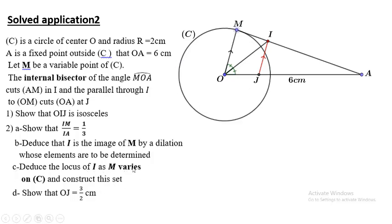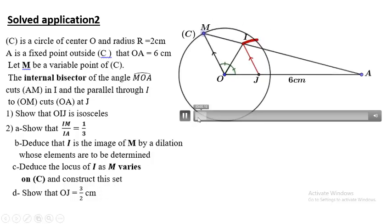Part C: Deduce the locus of I as M varies on C and construct this set. Part D: Show that OJ equals 3 over 2 centimeters, one and a half centimeters. Can anyone make a correct imagination that J is a fixed point? Let's play the video and see why if M moves on circle C, J specifically turns out to be fixed.